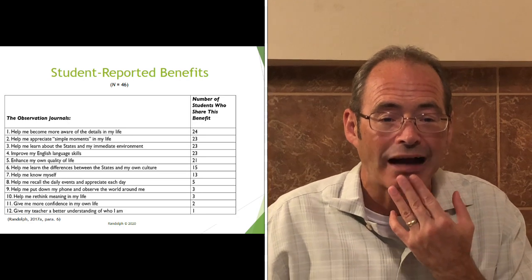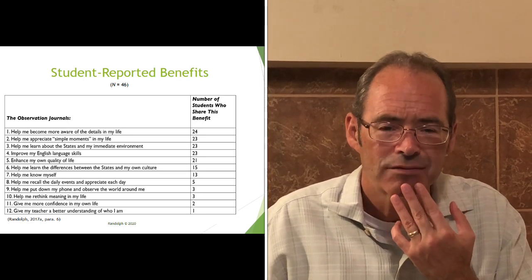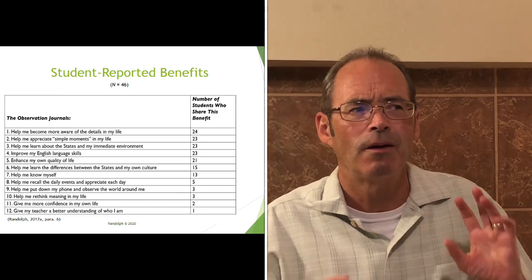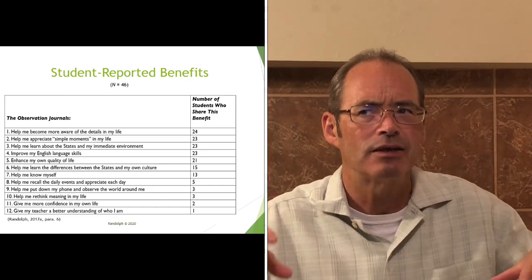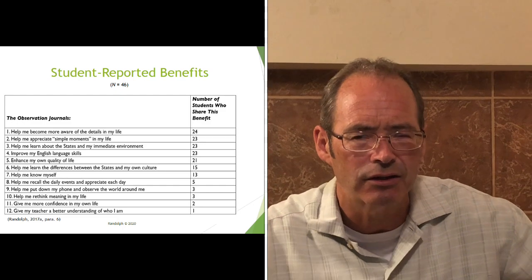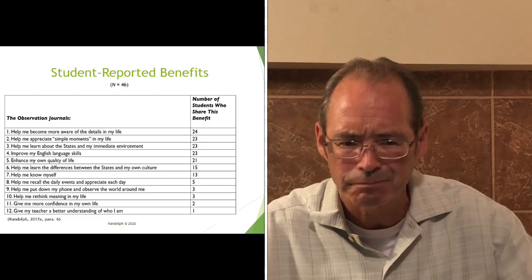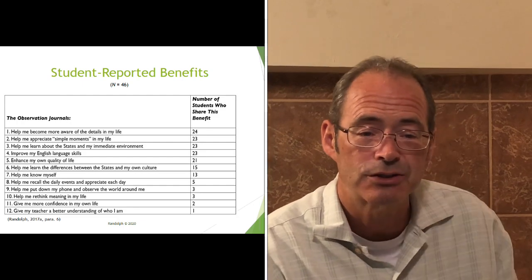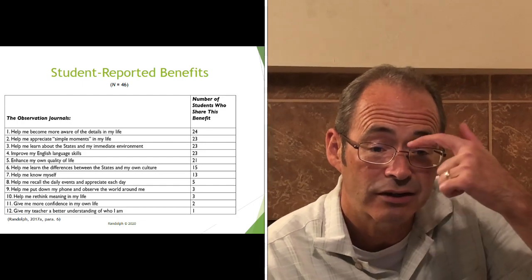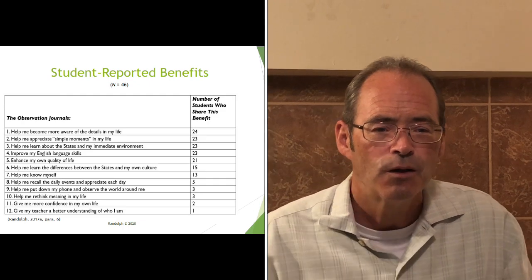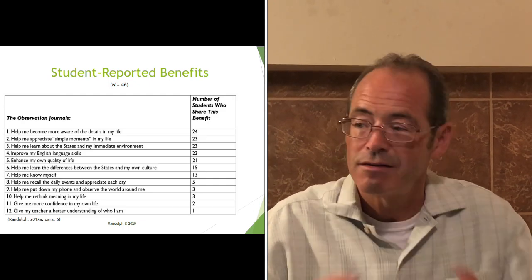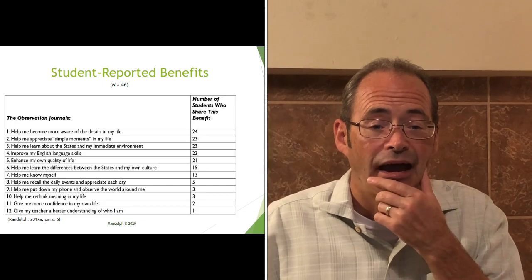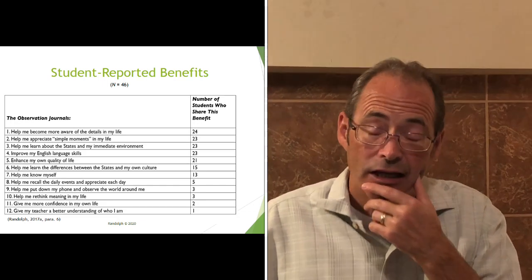Number ten, gave more confidence in their own life — when you're aware of things, you're in more control of what you can and can't do. And the last one — only one student wrote it, but it was interesting: 'give my teacher a better understanding of who I am.' Those were the main categories that students wrote about.